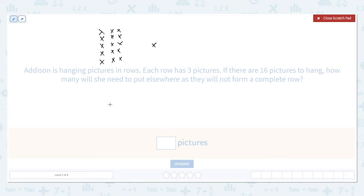Instead of drawing it out, we can simply divide. 16 divided by 3. Three goes into 16 five times. The product would be 15 with a remainder of one.